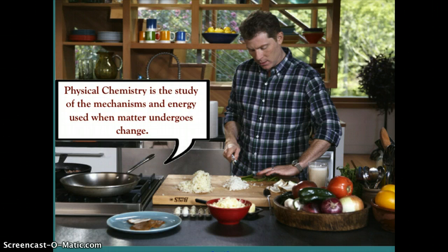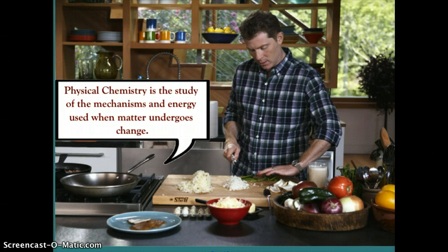Here we have a frying pan absorbing heat. How is that heat transformed through the frying pan and then into the food? And how does that frying pan take an egg and turn it from a liquid kind of gel to a solid protein that we eat as the white of the egg? So that would be physical chemistry — the study of the mechanisms and energy used when matter undergoes change.